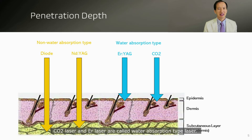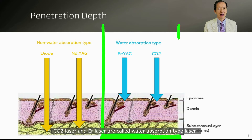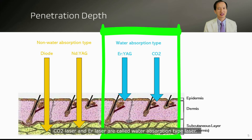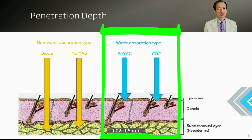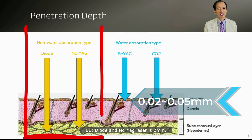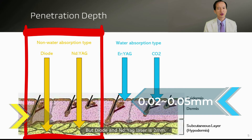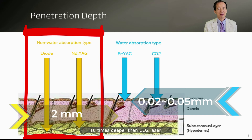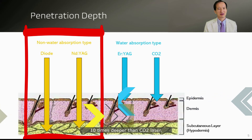CO2 laser and ER laser are called water absorption type lasers. The penetration depth is very shallow: 0.02 to 0.5 mm. But diode and Nd:YAG laser penetrate 2 mm — 10 times deeper than CO2 laser.